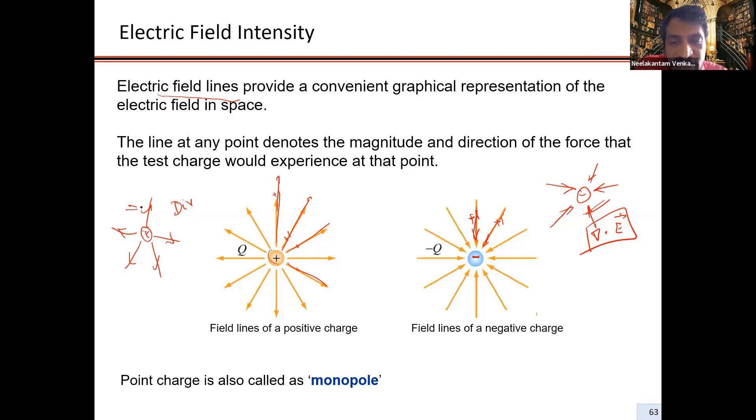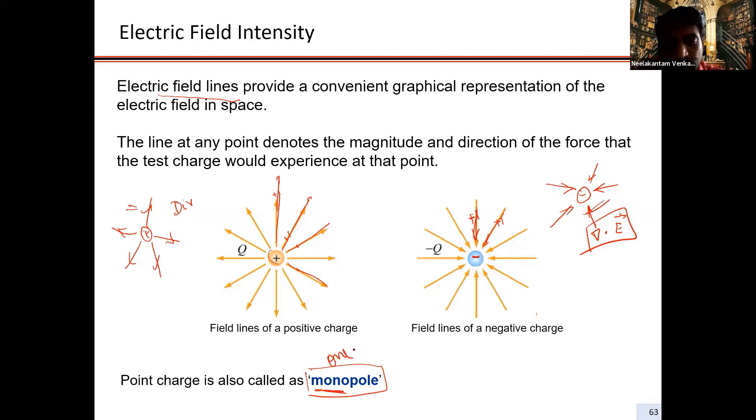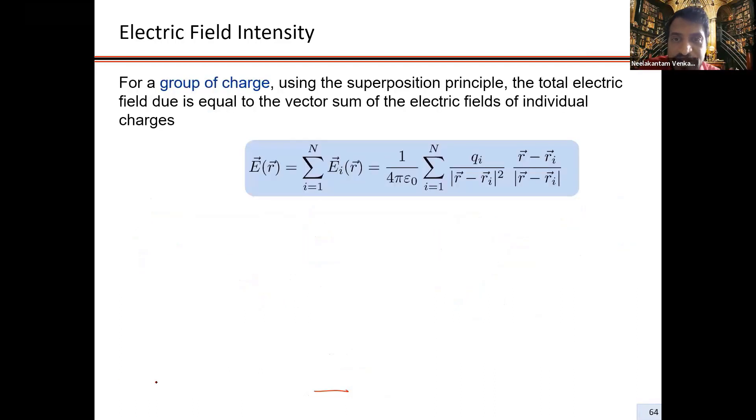This kind of point charge is also called a monopole. Mono means one. It's only one charge, either plus or minus. It's called a point charge because it's only at a certain point in space.